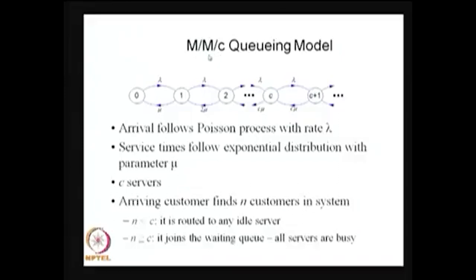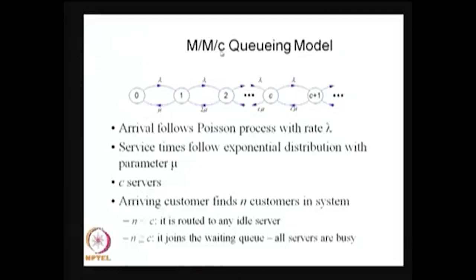With these assumptions, if we define the random variable X(t) as the number of customers in the system at any time t, that is a stochastic process. Since the possible values of the number of customers in the system at any time t are 0, 1, 2, and so on, it is a discrete-state process. Since we observe the queuing system at any time t, it is a continuous-time process. The system keeps moving into different states because of either an arrival or a service completion from any one of the c servers.